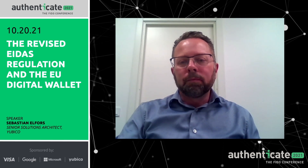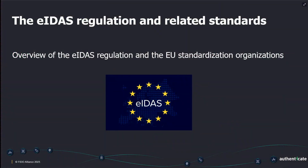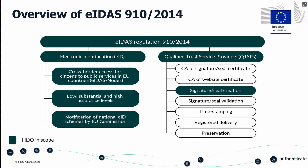Here's an overview of the eIDAS regulation and the EU standardization organizations that we have been interacting with. Here's an overview of the eIDAS regulation from 2014. On the left-hand side, we have the electronic identification pillar. It consists of three items. The first item is cross-border access for citizens to public services in the EU. There are low, substantial, and high assurance levels.